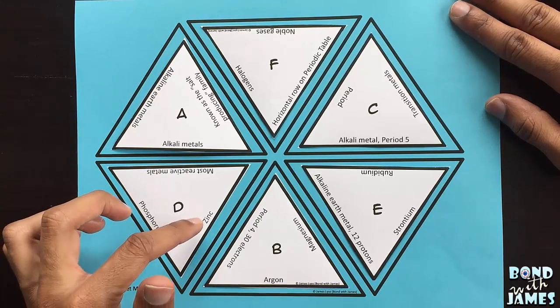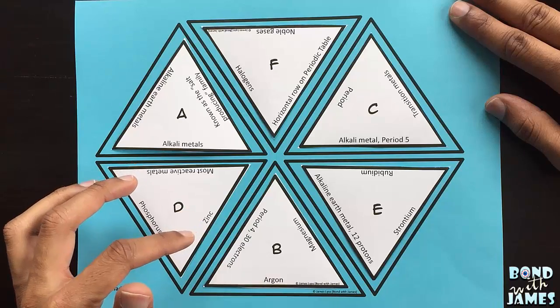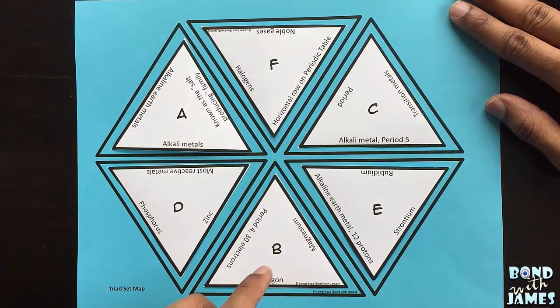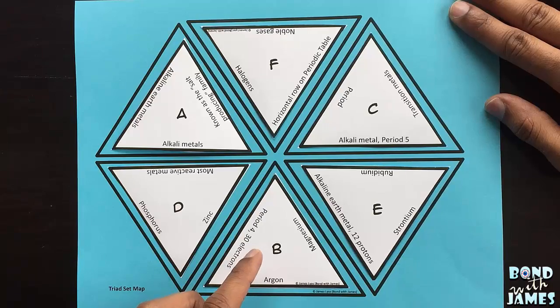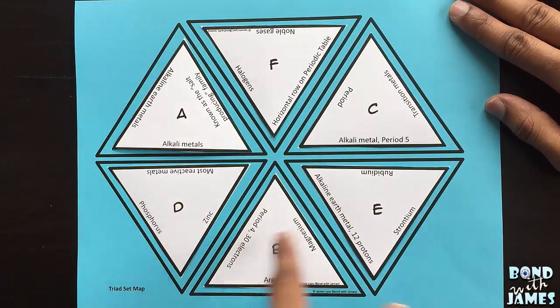Now a clue on one piece may match clues on multiple pieces. However, there's only one correct way to place the pieces together such that, at least in this case, they form a hexagon.